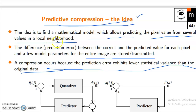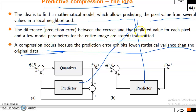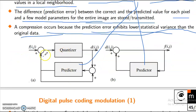Predictive compression — the idea: find the mathematical model which allows predicting the pixel value from several values in a local neighborhood. The difference prediction error between the correct and the predicted value for each pixel, and a few model parameters for the entire image, are stored and transmitted. A compression occurs because the prediction error exhibits lower statistical variance than the data. Components: predictor, quantizer.